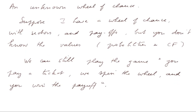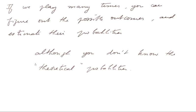Let's think now of the same kind of wheel of chance, but somehow unknown. Suppose I have a wheel of chance with sectors and payoffs, but you don't know the values. You don't know the probabilities — that is, the angles — and you don't know the cash flows, that is the payoffs. We can still play the game: you pay a ticket, we spin the wheel, and you win the payoff. If we play many times, you can figure out the possible outcomes and even estimate their probabilities, although you will not know the so-called theoretical probabilities.